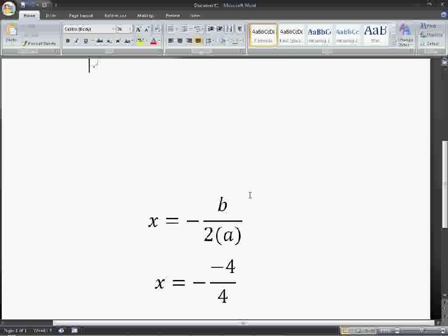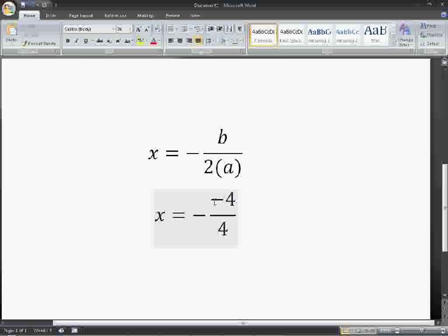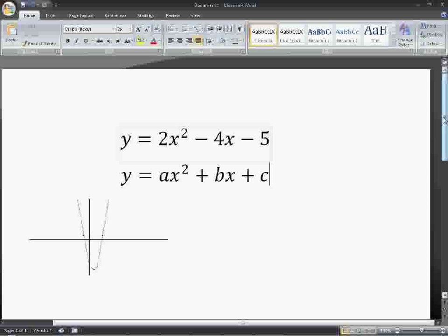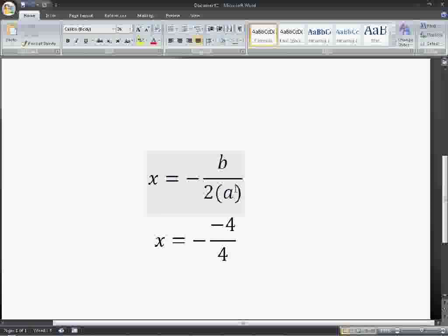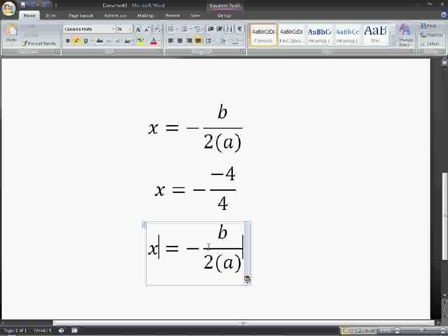When we substitute the numbers in, b is negative 4, a is 2, times 2 is 4. Then, you're going to just go ahead and solve that out, which you'll come out with x equals 1.